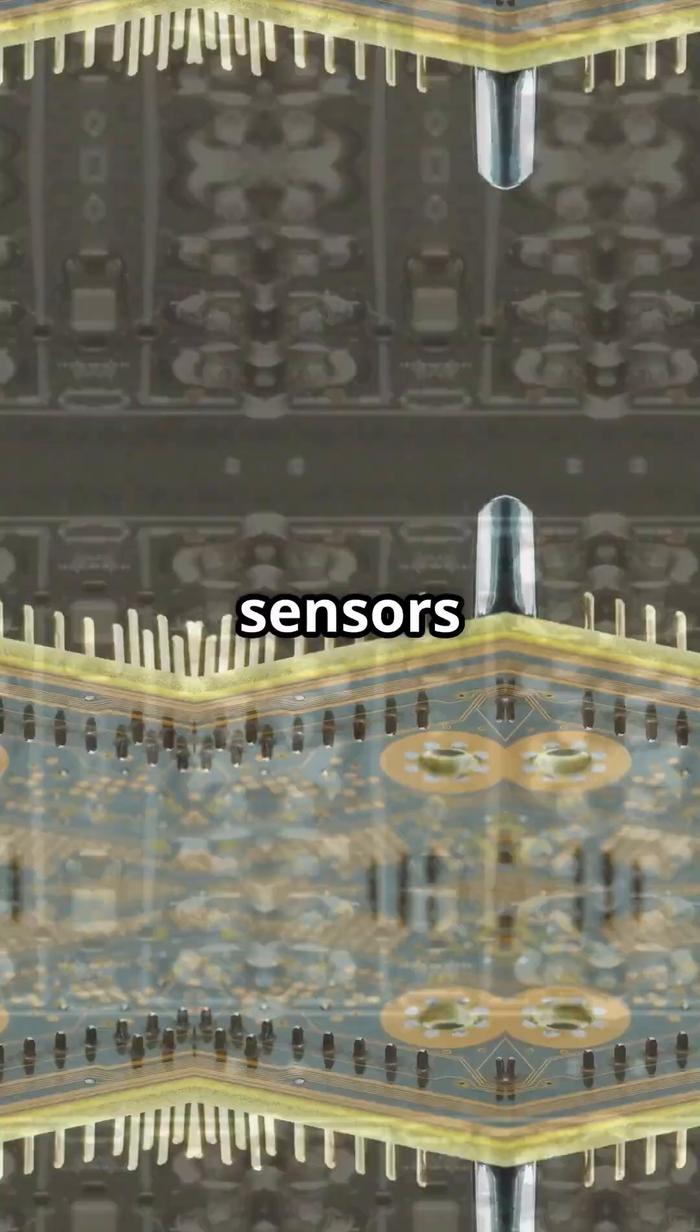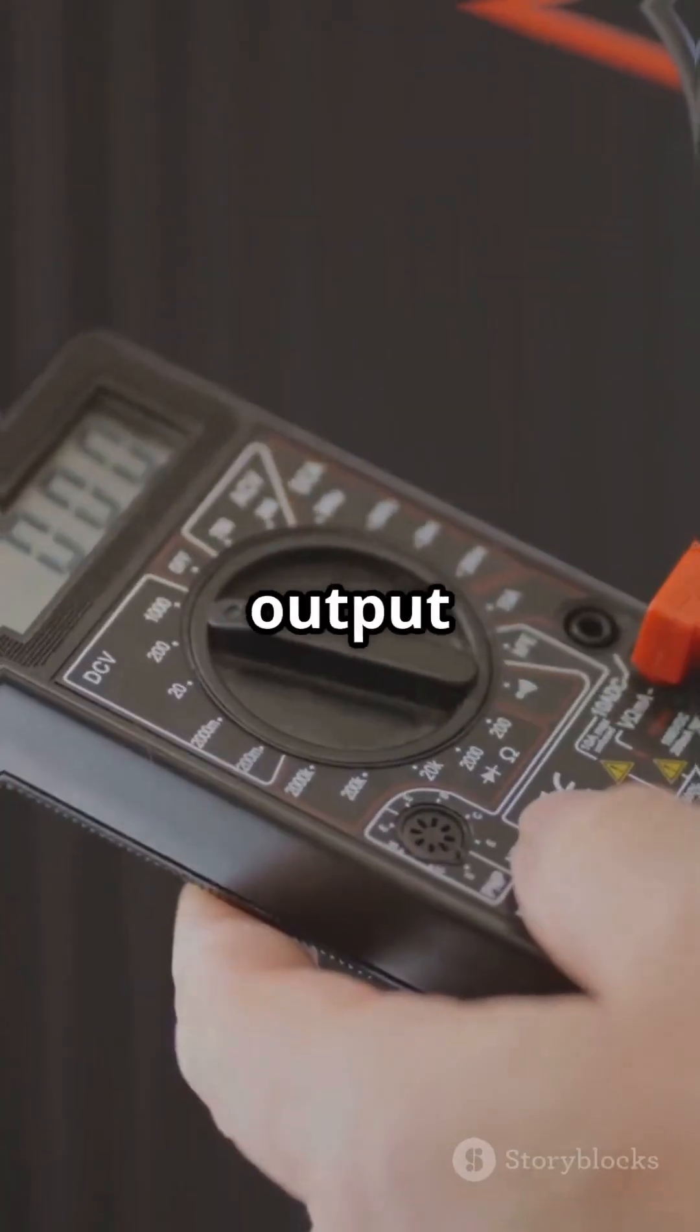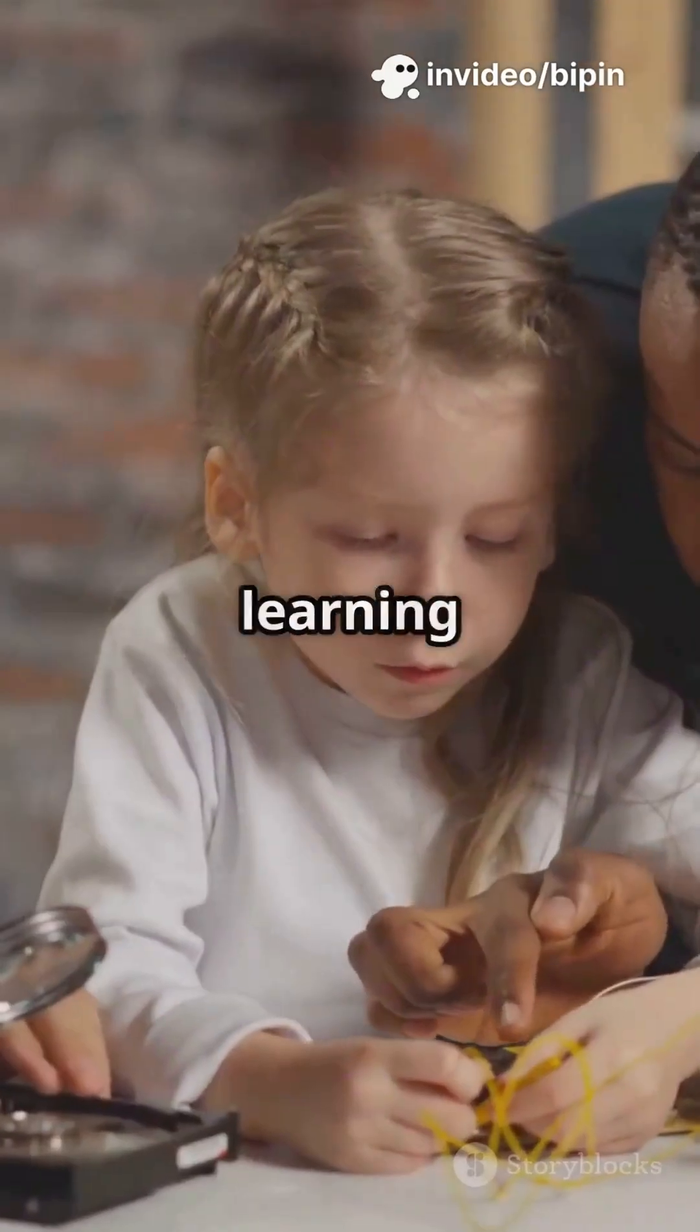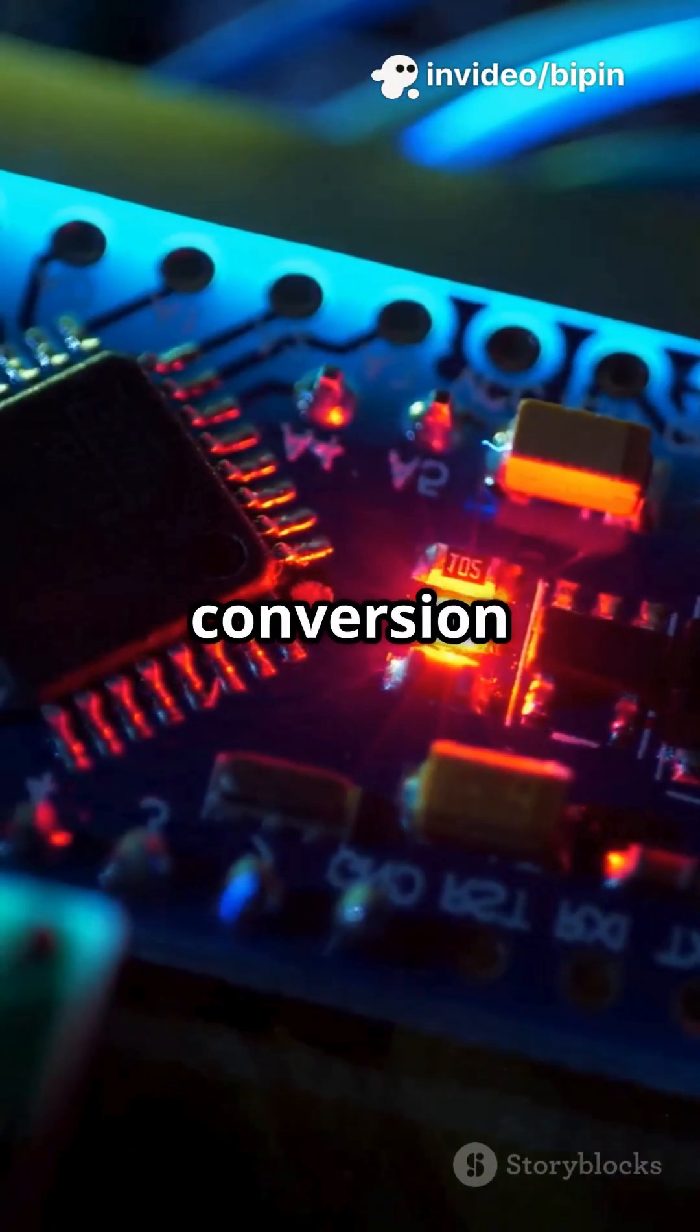And finally, analog sensors like the LM35, which output voltage that's proportional to the heat. Great for learning how analog to digital conversion works.